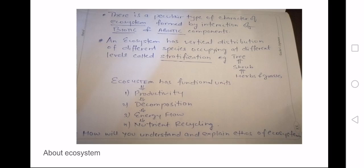The next slide, you can see there is a peculiar type of character of the ecosystem, and these may be due to the biotic and abiotic factors or components. The system is actually represented by a vertical distribution of different species which occupy different levels. These are known as stratification. The stratification example can be the tree at the highest level, then the shrubs, and the herbs and grasses.